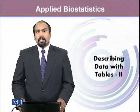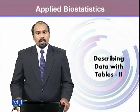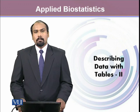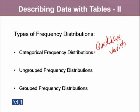When we are describing our data in the form of a table, we construct a frequency distribution. But for all the different types of variables, frequency distributions are constructed differently. There are three types: categorical frequency distribution, which is constructed for qualitative variables, and ungrouped and grouped frequency distributions, both of which are constructed for quantitative variables.